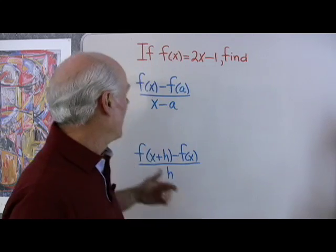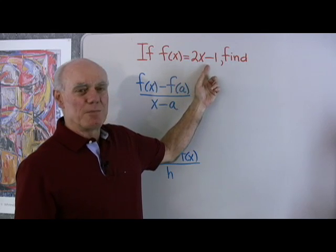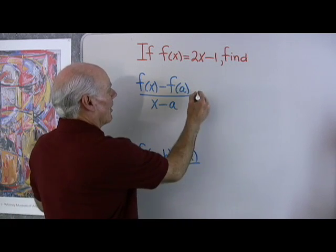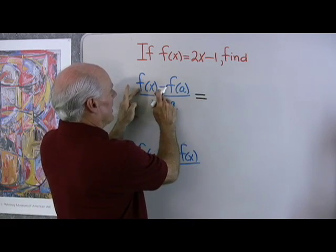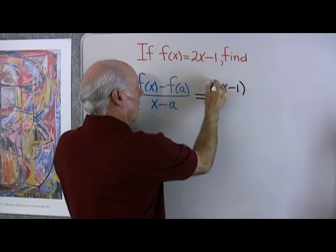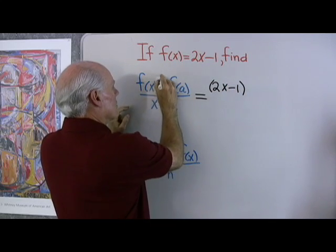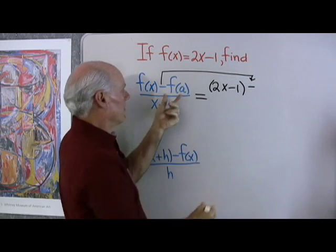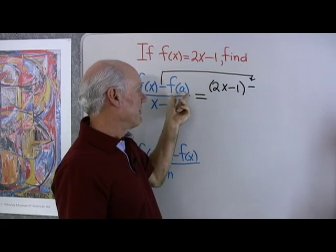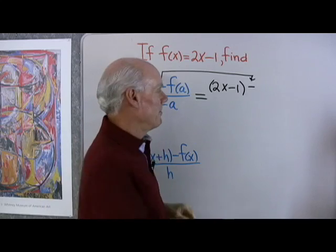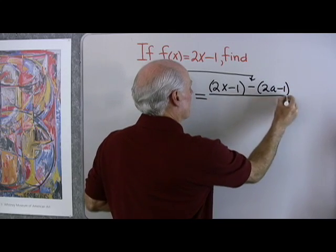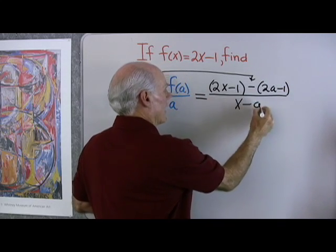A little more work with function notation. I have this function f(x) = 2x minus 1. Let's find f(x) minus f(a) over x minus a. So f(x) is 2x minus 1 — I'll put it in parentheses. Here's my subtraction sign because that's part of the problem. Now I want f(a). Well, if f(x) is 2x minus 1, f(a) is going to be 2a minus 1. So 2a minus 1, all divided by x minus a.